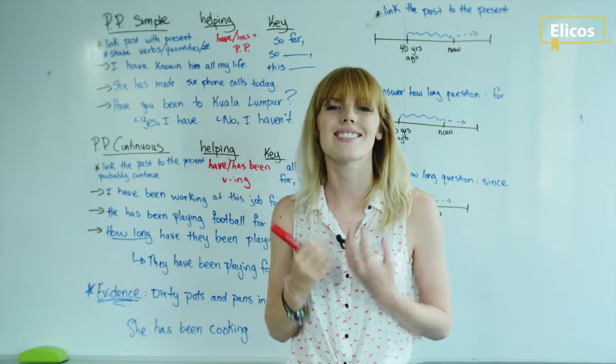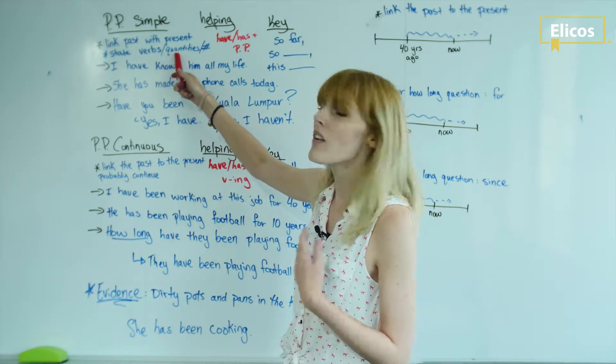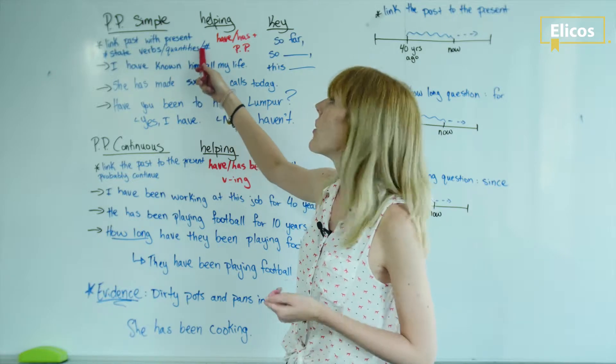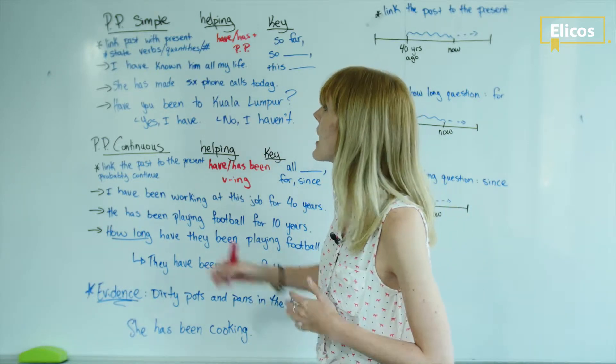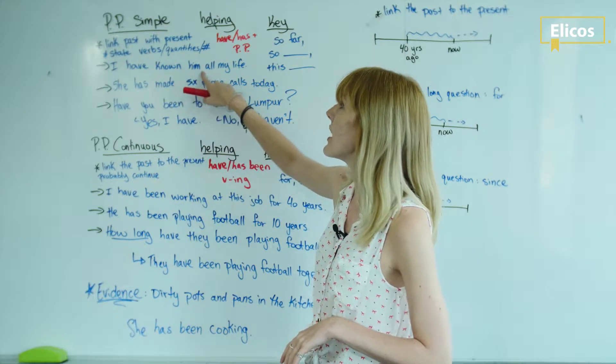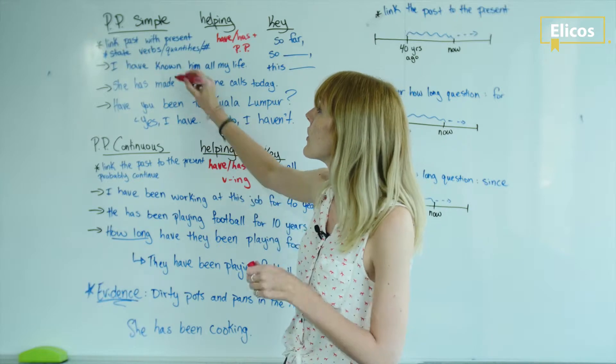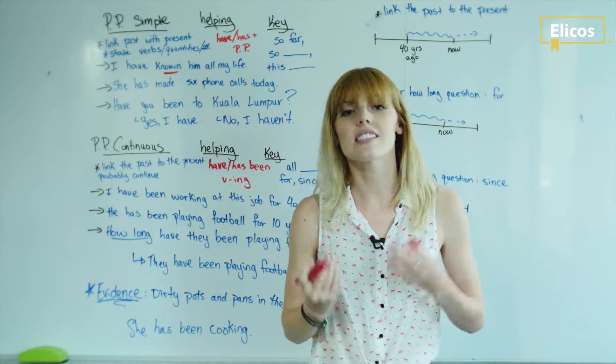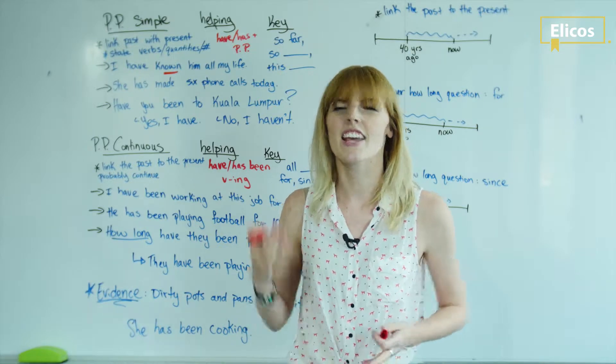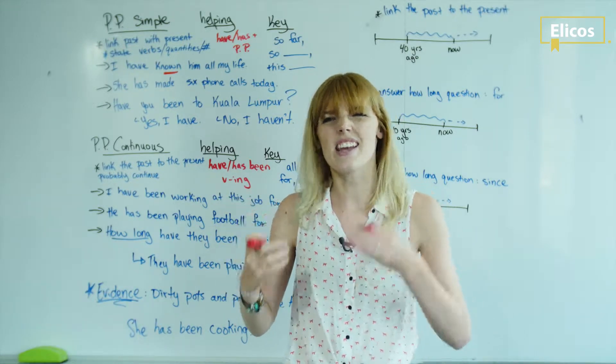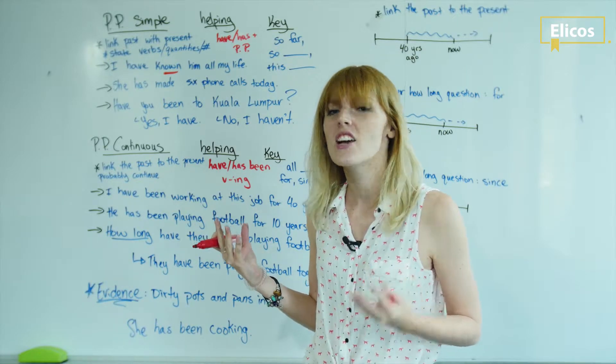Let me give you some examples. I have known him all my life. Know is a state verb. If I know something, I know it. I can't be knowing it right now. I know it. It's a fact, so I have to use the simple form.